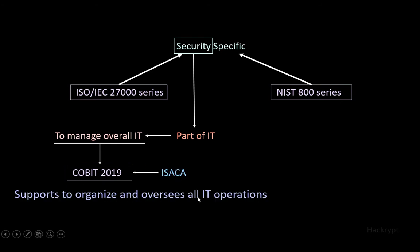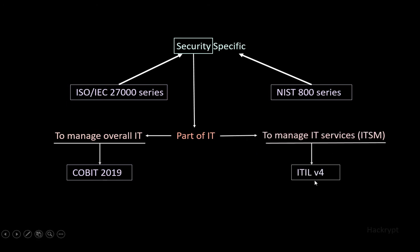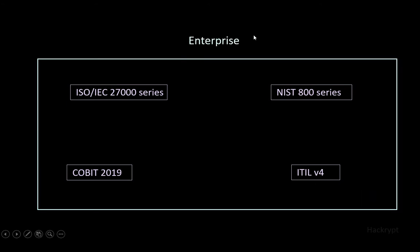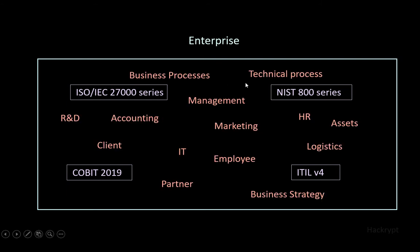These standards are security-specific, and since security is a part of IT, we need a system to manage the overall IT infrastructure. For that we can use COBIT, proposed by ISACA, which supports organizing and overseeing all IT operations. We also need a system to manage IT services, for which we can use ITIL, which helps IT teams organize their daily tasks. All these standards and frameworks are used within an enterprise, which is made up of many elements.